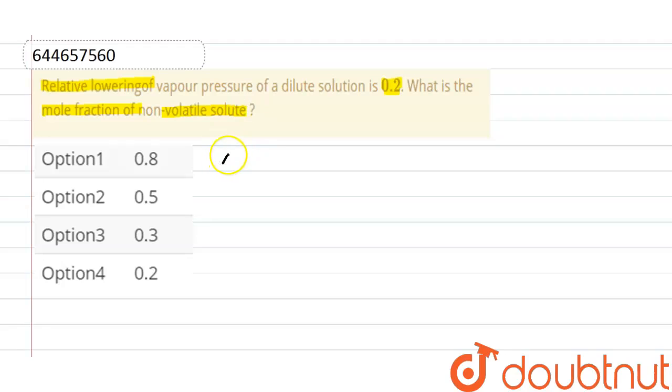First of all, what is Raoult's law? According to Raoult's law, relative lowering of vapor pressure is equal to the mole fraction of non-volatile solute.